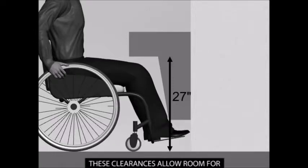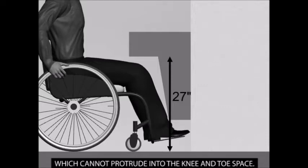These clearances allow room for plumbing, enclosures, and supports which cannot protrude into the knee and toe space.